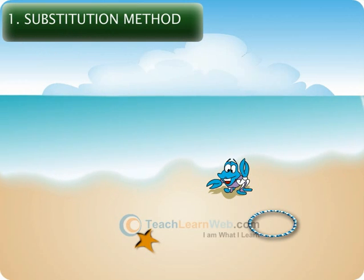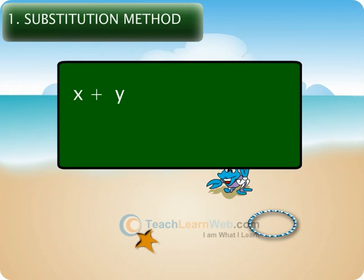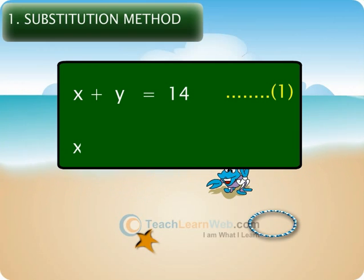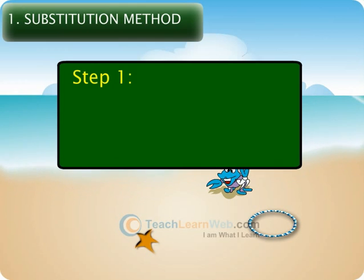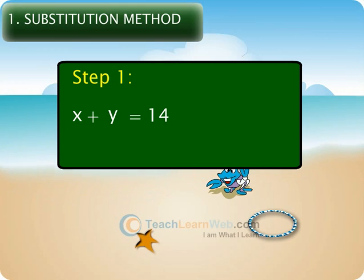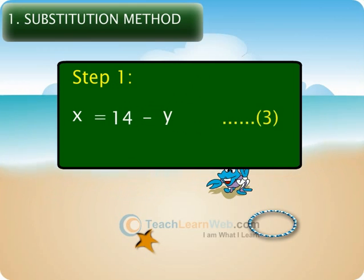Consider the pair of linear equations: x plus y is equal to 14 — let it be equation 1 — and x minus y is equal to 4 — let it be equation 2. Step 1: Consider equation 1 and write one variable in terms of the other. That is, from x plus y equals 14, we can write x is equal to 14 minus y. Let it be equation 3.